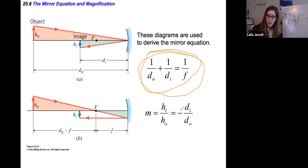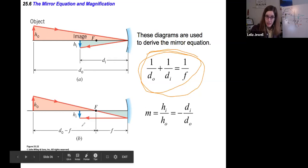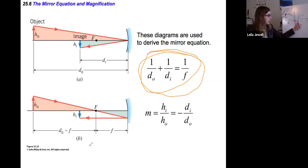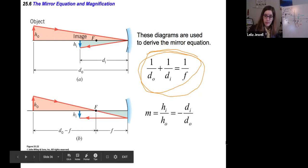You can also calculate magnification with negative d_i over d_o. The negative tells you that if you get a negative magnification, the image is inverted, flipped over. With a positive image distance and positive object distance, you get a negative magnification, like with our concave mirror. In this case, we had a negative image distance, so our image is upright. It's a positive magnification.